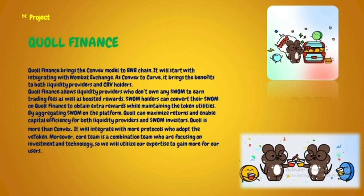The first project is Quoll Finance. It brings the Convex model to the BNB chain, starting by integrating with Wombat Exchange, similar to how Convex works with Curve. It brings benefits to both liquidity providers and WOMB token holders. It allows liquidity providers who don't own any WOMB to earn trading fees as well as boosted rewards. By aggregating WOMB on the platform, Quoll can maximize returns and enable capital efficiency. Quoll Finance plans to integrate with more protocols and its core team combines investment and technology expertise.